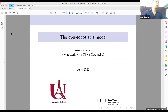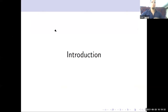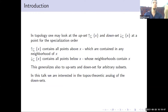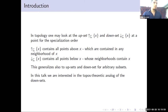Let me first introduce my topic. If you have a topological space, you have a specialization order between points, and at a given point you can look at the upset or the downset of this point in the specialization order. The upset contains all points that lie above a given point x, and the downset contains points that are below a given point. This construction generalizes to arbitrary subsets of your topological space.